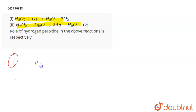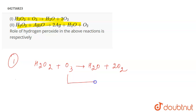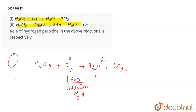In the first reaction, H₂O₂ + O₃ gives H₂O + 2O₂. Here, O₃ is getting converted to H₂O, so addition of hydrogen is taking place. Also, the oxidation number of oxygen is changing from 0 to minus 2, which means the process of reduction is taking place.